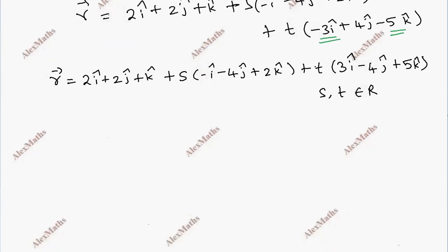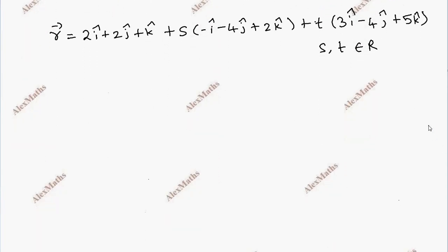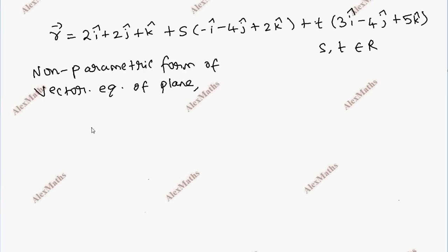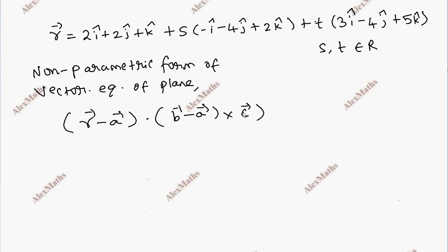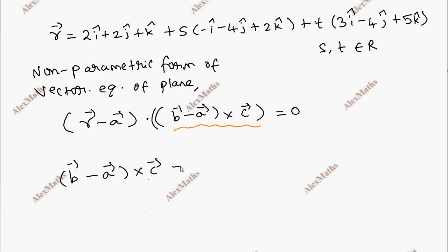For the non-parametric form, we use the equation involving (R minus a) dot (b minus a cross c vector) equals zero. So we need the cross product of (b minus a) with c vector.